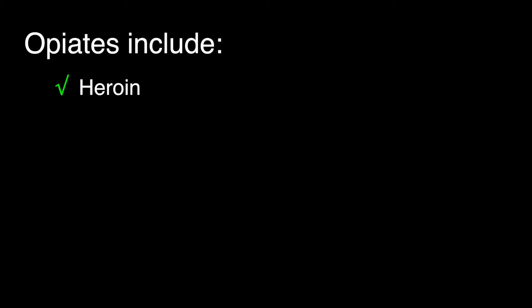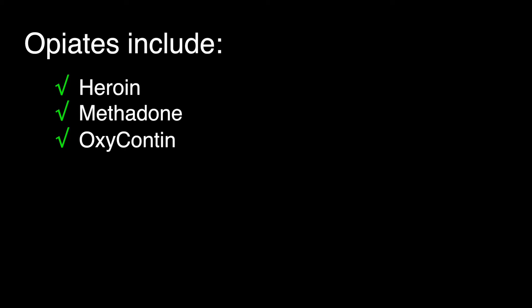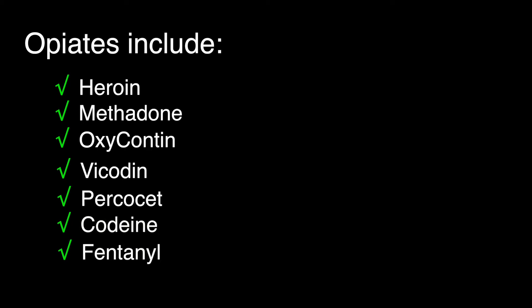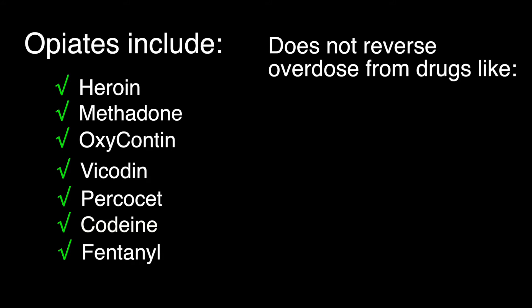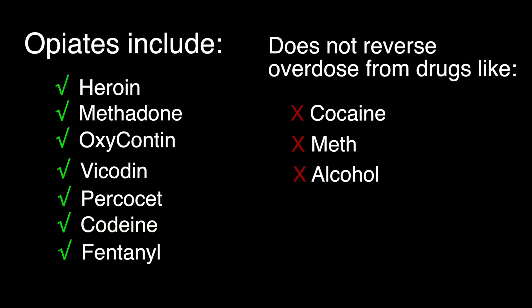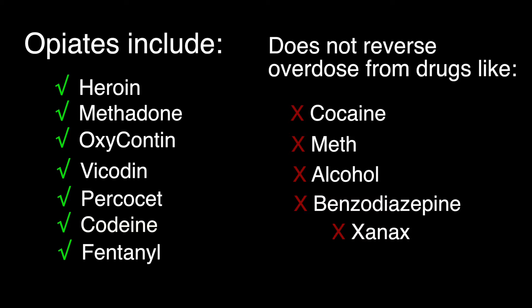Opiates include drugs like heroin, methadone, oxycontin, Vicodin, Percocet, codeine, and fentanyl. Naloxone does not reverse overdose from drugs like cocaine, meth, alcohol, or benzodiazepines like Xanax or Valium.